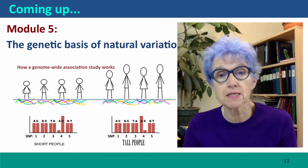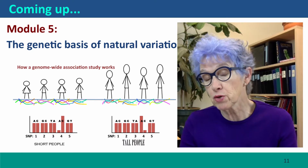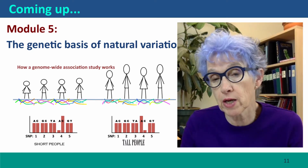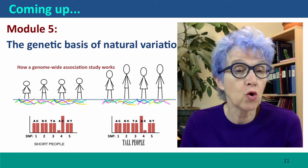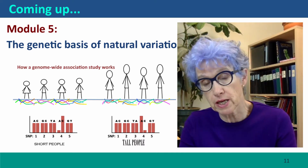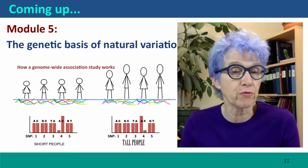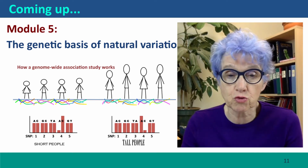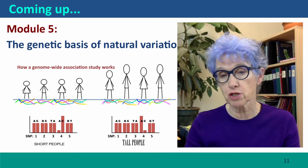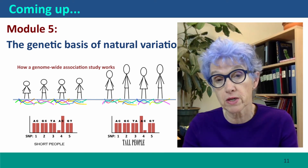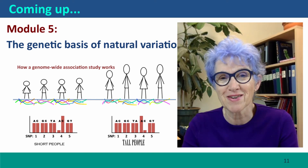Coming up next is Module 5, where we're going to delve into the genetic basis of natural variation. We're doing what modern geneticists have become able to do — moving from thinking about simple contrived situations to thinking about the natural variation that controls the phenotypic properties that we really care about. I hope to see you there.